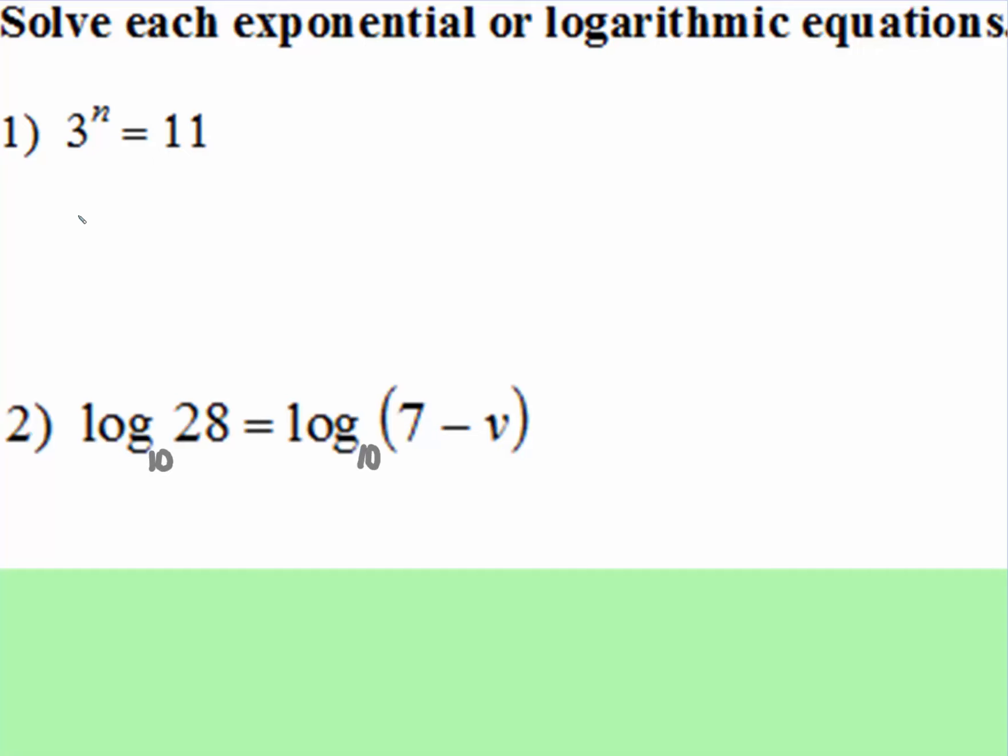So look at what we have here. We have this base number 3. We have this exponent of n is equal to 11. Well, to solve that, we're going to undo that operation and the undoing superpower is logarithm. So the base number, remember the base goes here, the value goes here, the exponent goes here.